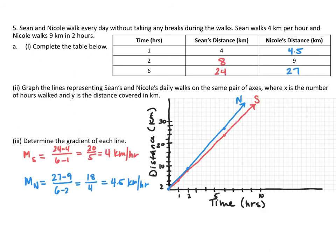To finish filling out the table, if Sean walks 4 kilometers per hour, then after 1 hour he'd be at 4 kilometers, 2 hours he'd be at 8, 6 hours he'd be at 24. If Nicole walks 9 kilometers every 2 hours, that means after 1 hour she'd be at 4.5 kilometers, 2 hours she'd be at 9, and 6 hours she'd be at 27. So then I graph this. I have my x-axis being time in hours, I have my y-axis being distance in kilometers, and the red line is Sean's walk, and the blue line is Nicole.